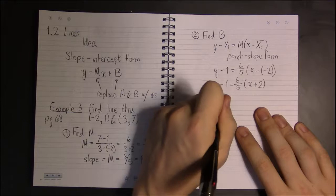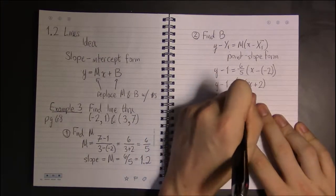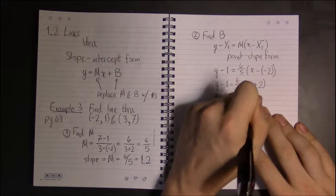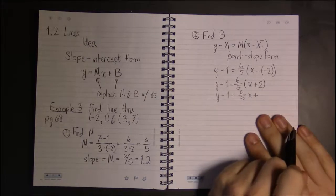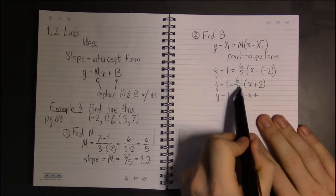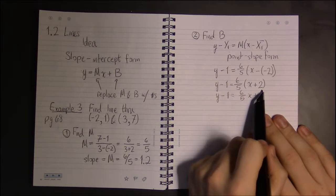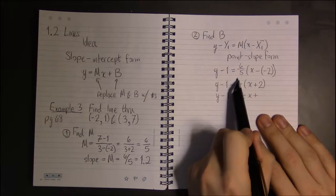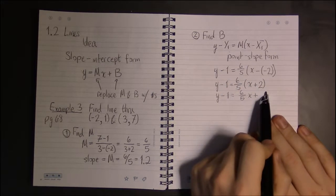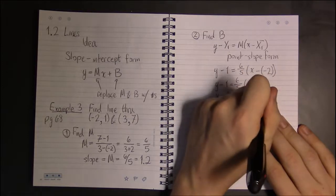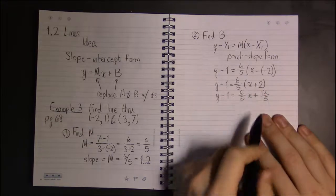If I distribute 6/5, 2 is just 2 over 1. So, 6/5 times 2 is just 6/5 times 2/1. And multiplying fractions is just multiplying straight across. So, it's 6 times 2 over 5 times 1. 6 times 2 is 12. 5 times 1 is 5.